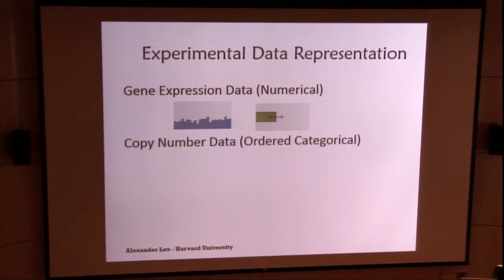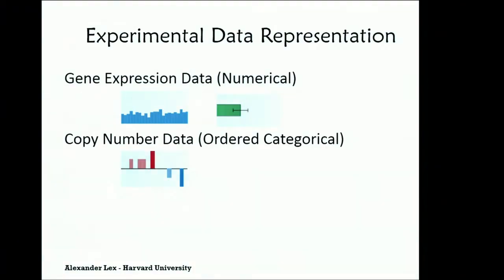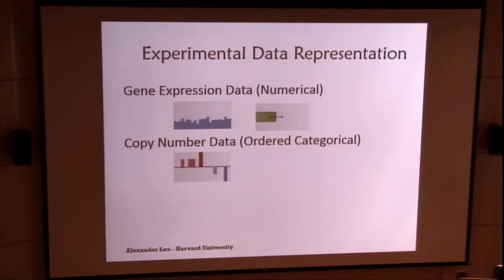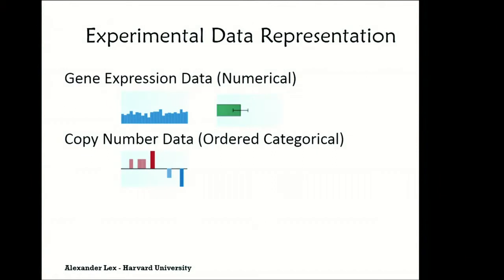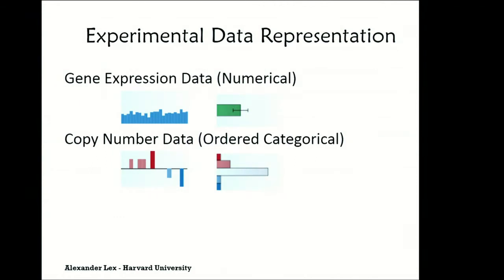So for copy number data, you can think of copy number data as ordered categorical data. And here we came up with this little visual encoding, where you have a baseline, which means if you have nothing here, that means the corresponding patient at this position doesn't have a change in copy number. But if you have bars pointing upwards, there's an increased copy number. If you have bars pointing downwards, there is a deletion in at least one of the alleles. And as an abstract representation, to show a larger group, we use histograms, because they're very efficient at summarizing lots of data.